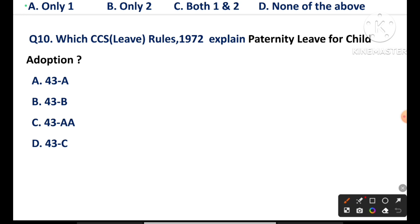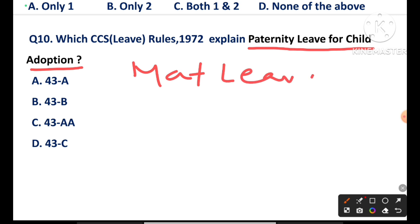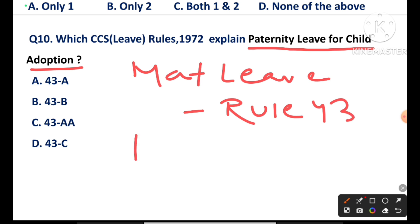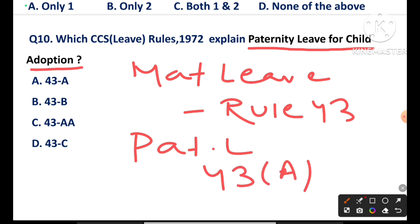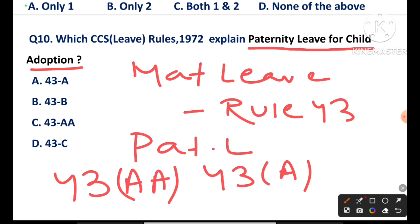Question number 10: Which CCS Leave Rules 1972 rule explains paternity leave for child adoption? Maternity leave = Rule 43. Paternity leave = Rule 43A. Paternity leave for child adoption = Rule 43AA. So option C is the correct answer.